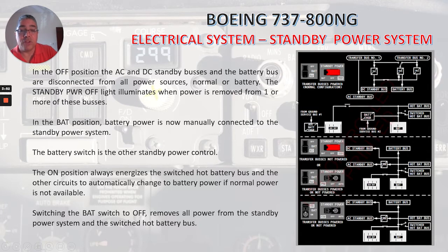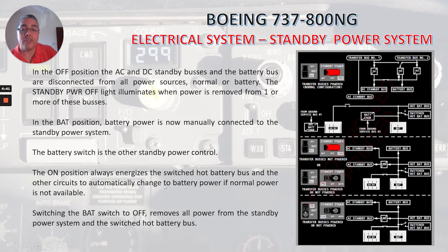In the back position, battery power is manually connected to the standby power system. The battery switch is the other standby power control. The on position always energizes the switched hot battery bus and the other circuits to automatically change to battery power if normal power is not available. Switching the battery switch to off removes all power from the standby power system and the switched hot battery bus.